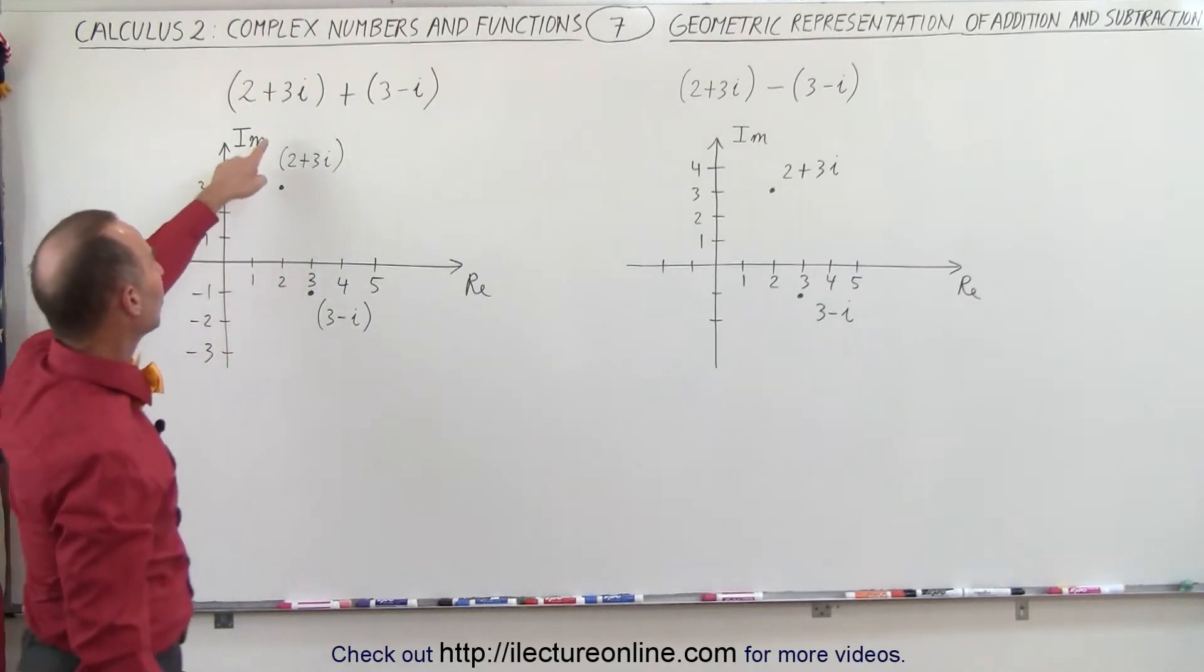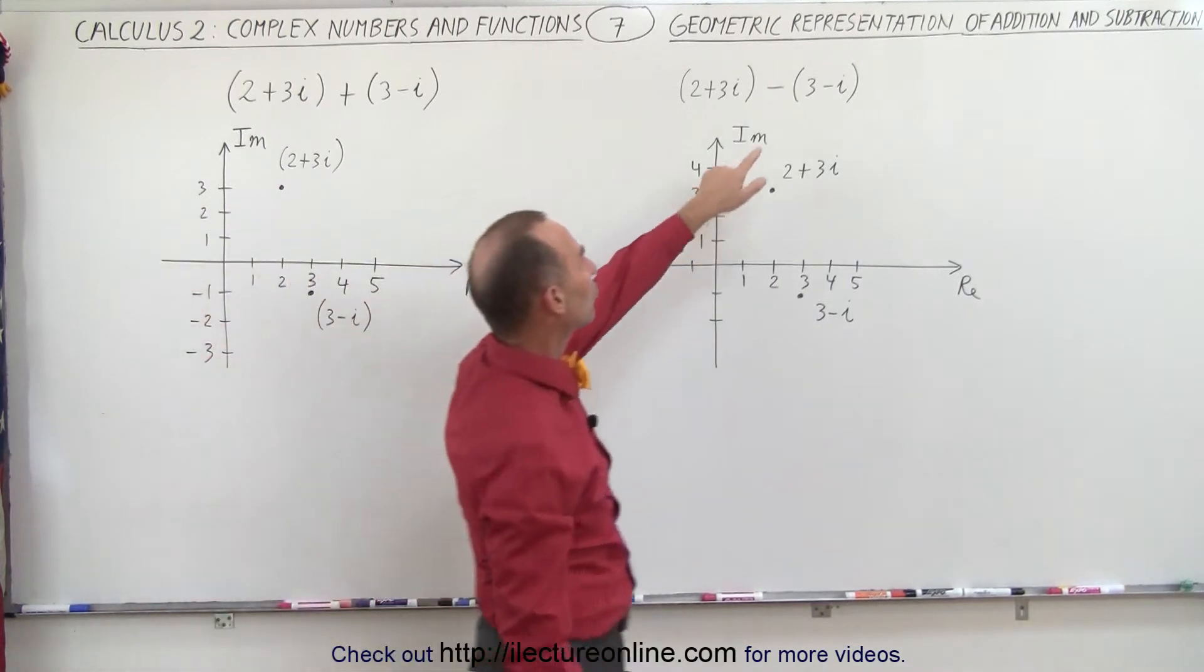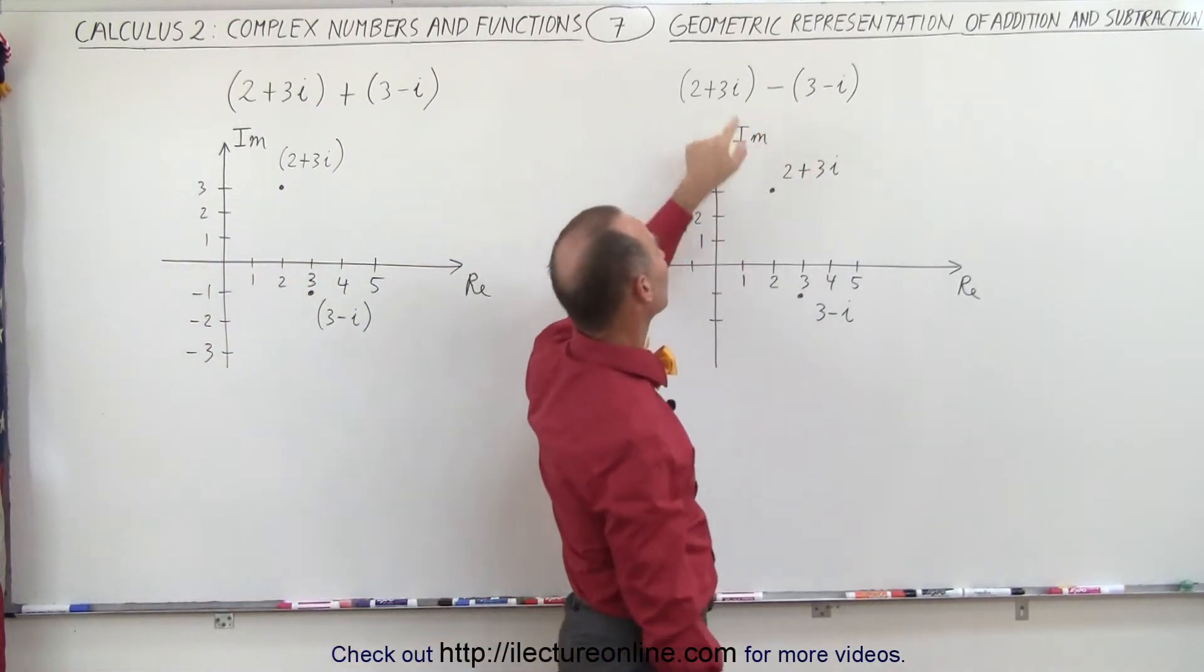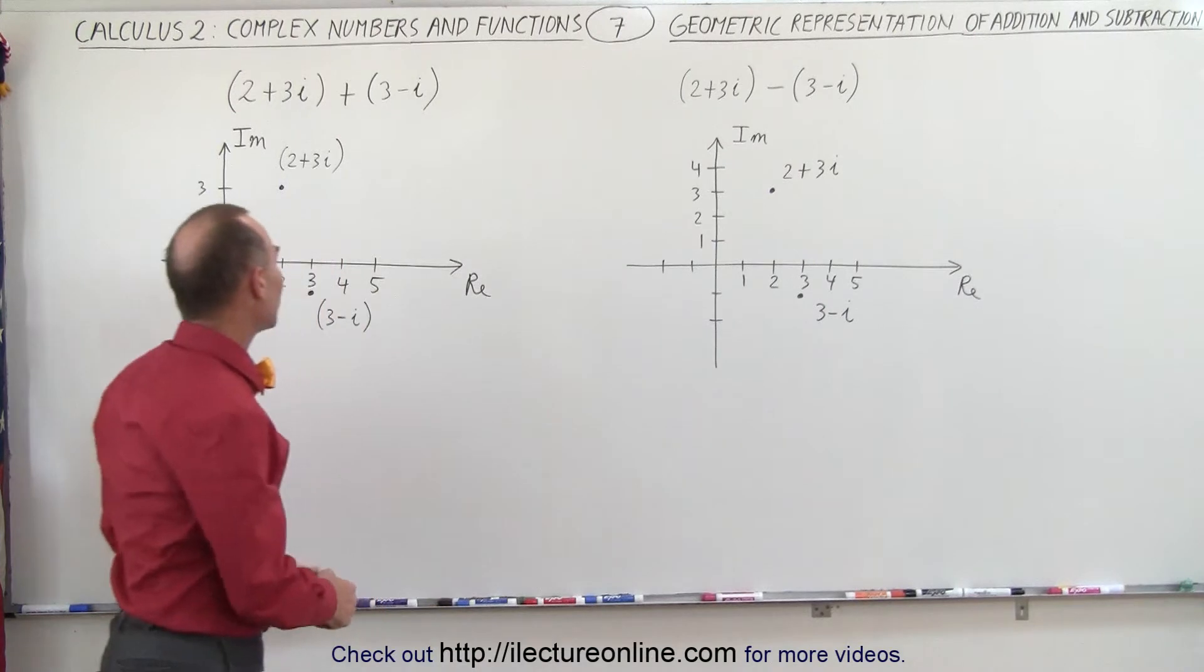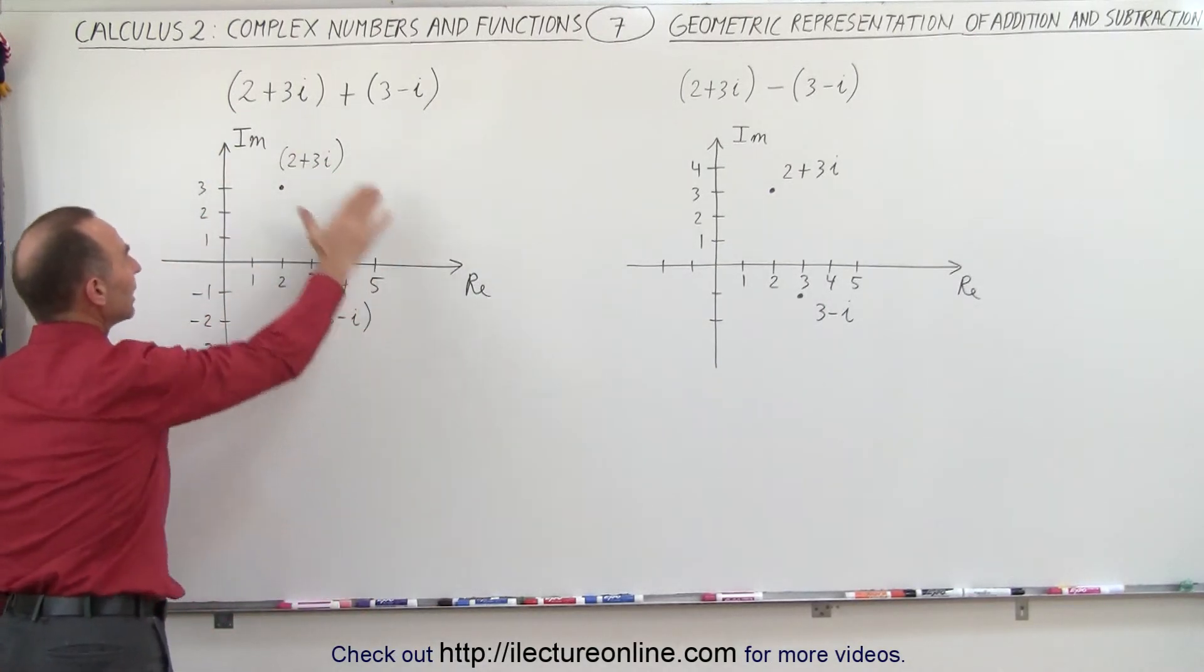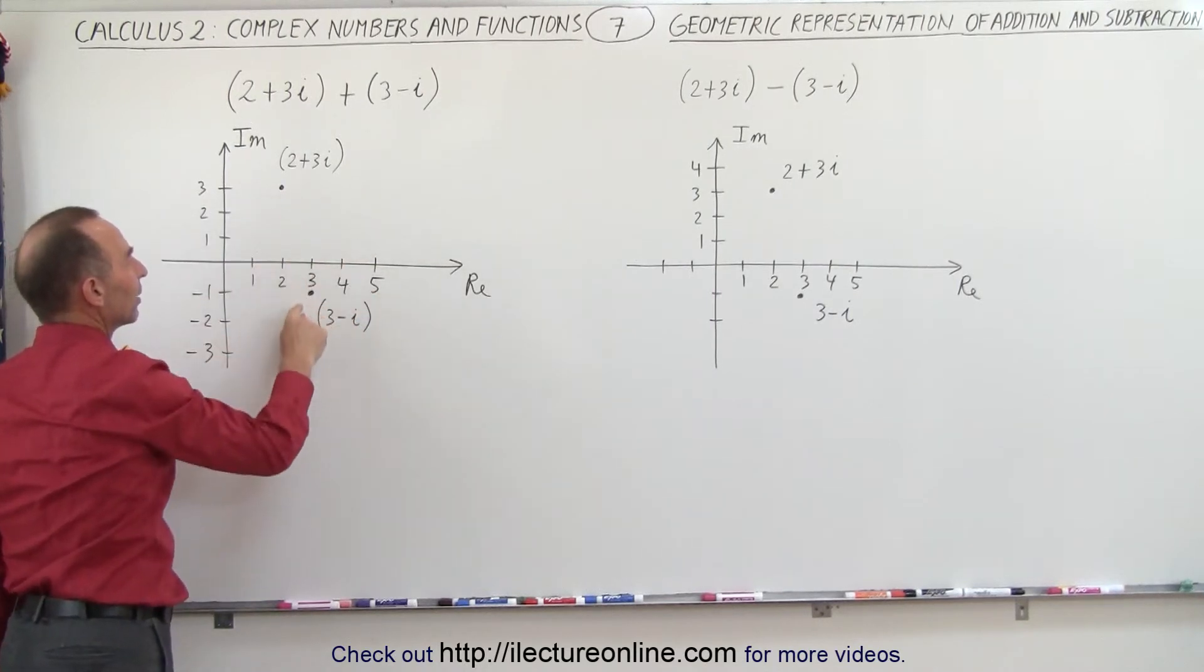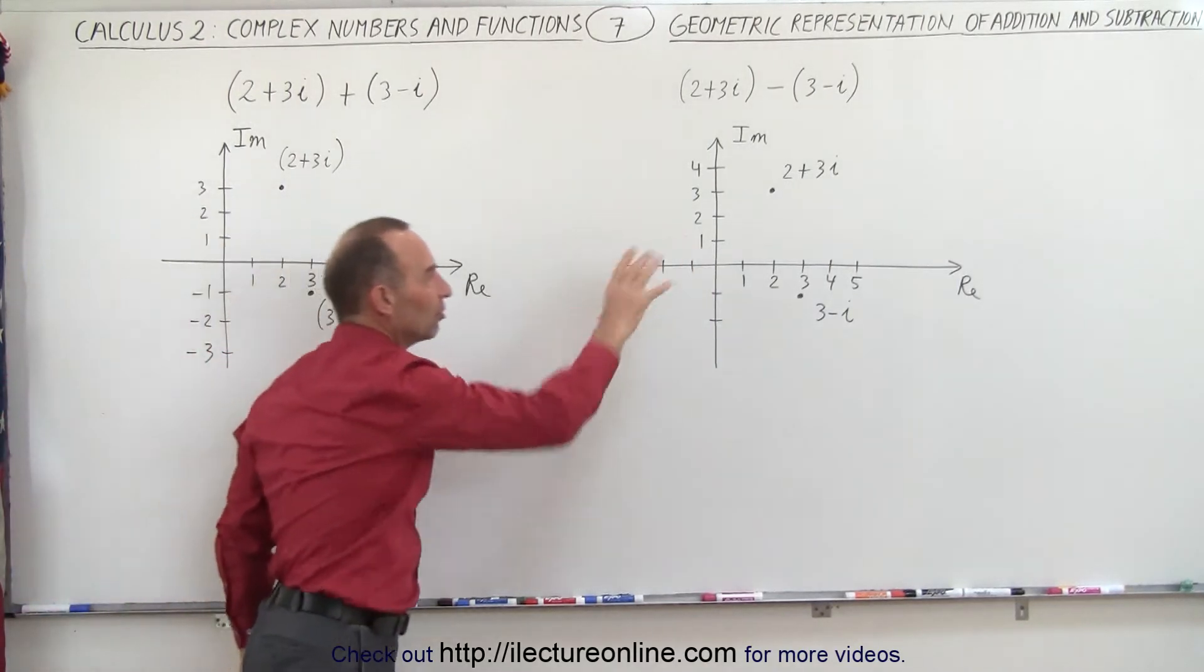So here we're going to add 2 plus 3i to 3 minus i, and here we're going to subtract 3 minus i from 2 plus 3i. I've already represented the location on the real and imaginary plane, the values of 2 plus 3i and 3 minus i on both of these graphs.